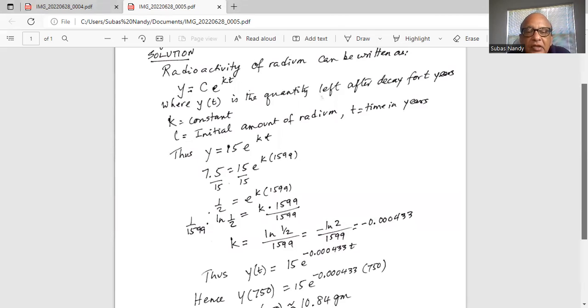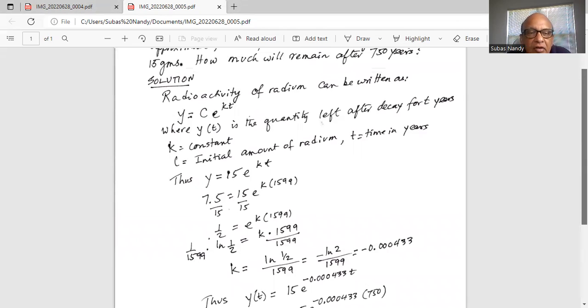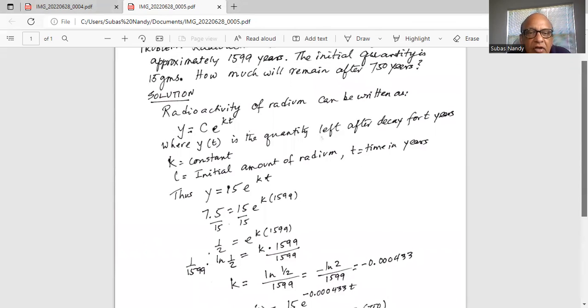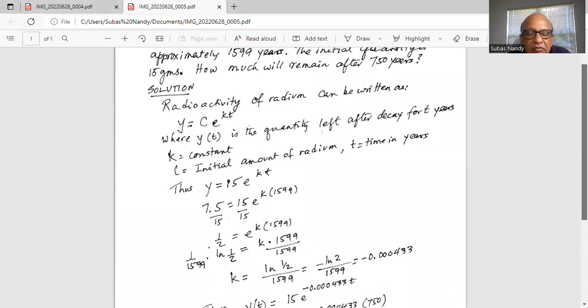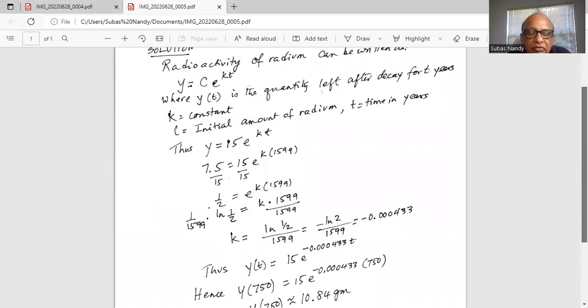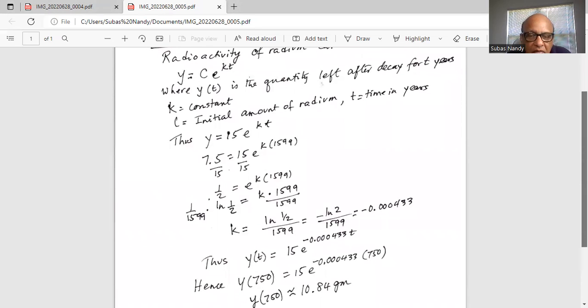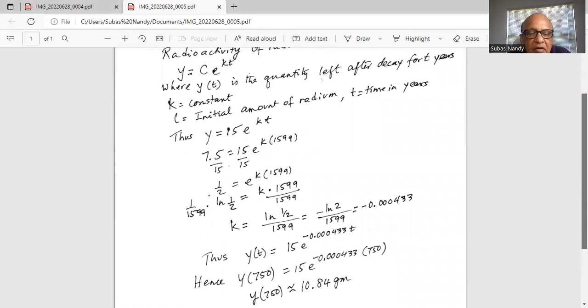Thus y(t) is the amount of radium left after decay for t years. y(t) = 15e^(-0.00433t). We are asked how much radium is left after 750 years. For t we substitute 750.